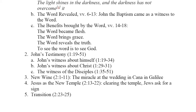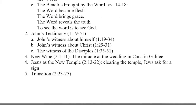The Word was revealed by the ministry of John the Baptist, who came as a witness to the Word, in verses 6 through 13. The benefits brought by the Word are described in verses 14 to 18: the Word became flesh; the Word brings grace; the Word reveals the truth; and to see the Word is to see God. John then records John the Baptist's testimony in the rest of chapter 1 — John's witness about himself, John's witness about Christ, and the witness of the disciples.